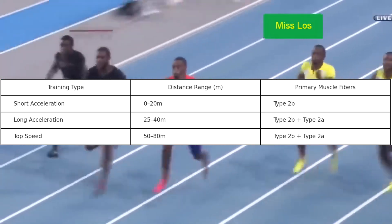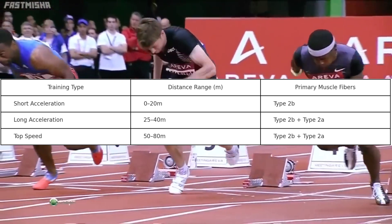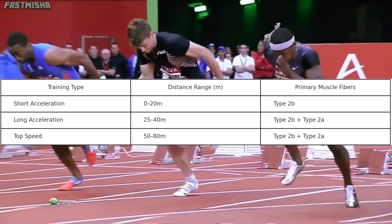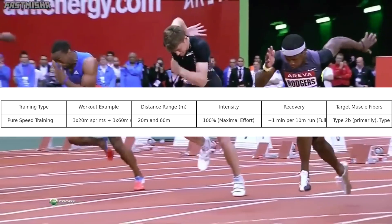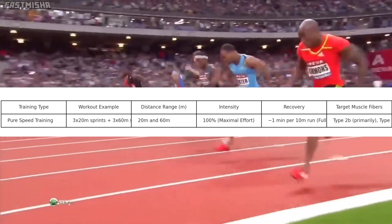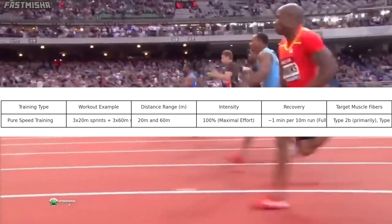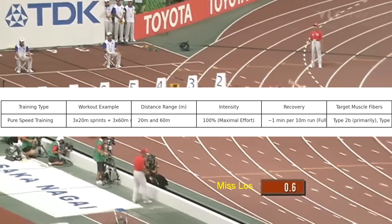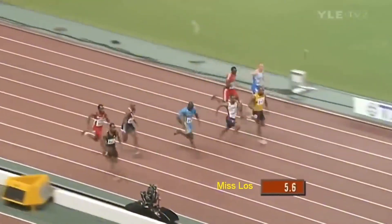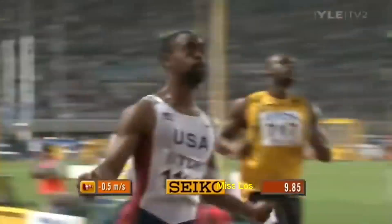Speed training for pure acceleration and top speed requires full rest and maximum intensity. This targets your type 2b muscle fibers, which are essential for a good start and top speed. An example speed workout can be three times 20 meter sprints followed by three times 60 meter sprints, with full recovery of about one minute per 10 meters ran. Speed training requires significant rest because fast twitch muscle fibers tire out quickly, and without sufficient rest, you won't let these muscle fibers fully recover to allow proper training stimulus for adaptation. Short rest interval training has its benefits, but every form of training has a time and place.